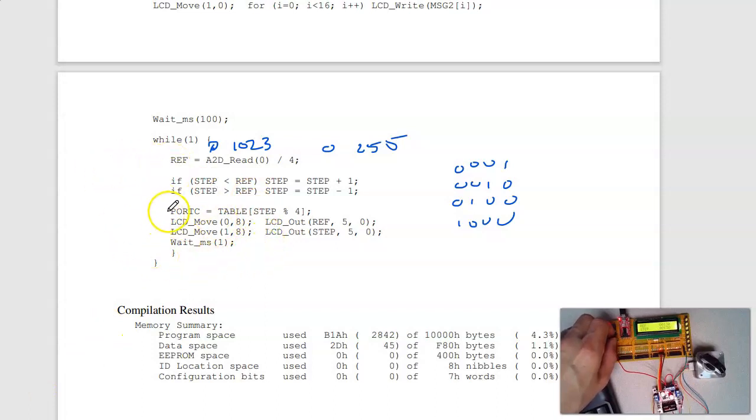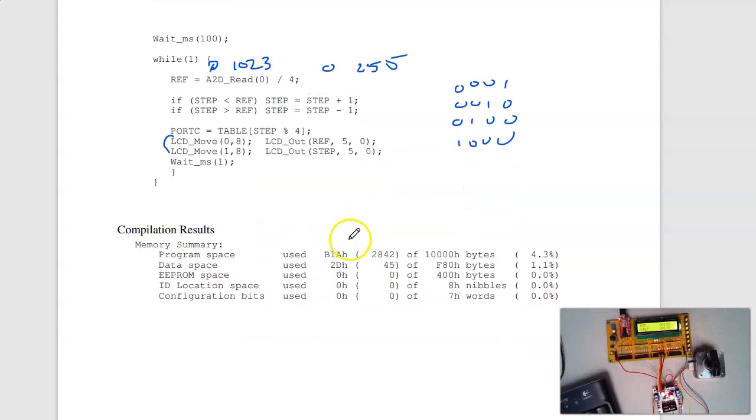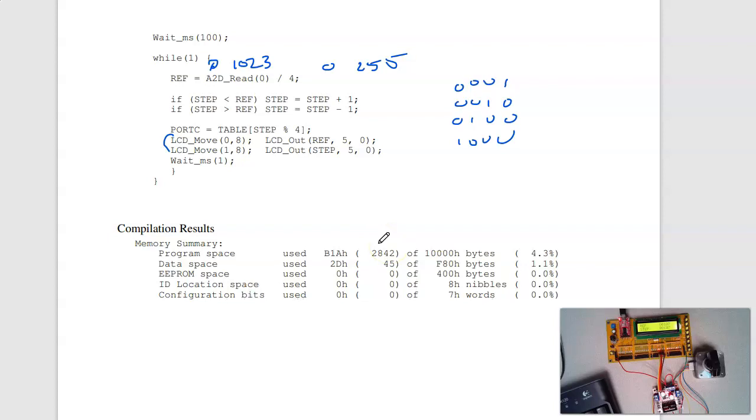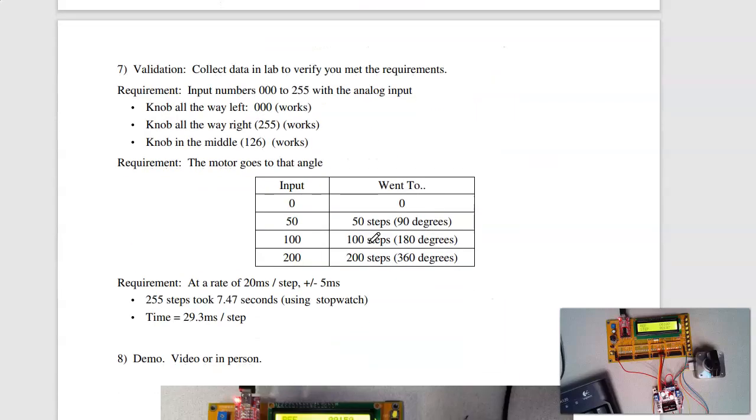Wait a millisecond. Basically because the LCD already takes about 10 milliseconds to run. And repeat. When I'm done, I've got 2842 bytes divided by two. 1421 lines of assembly. Again, I wouldn't want to do this in assembly. That's really the nice thing about C. Much easier writing code.